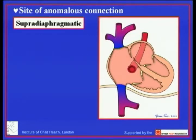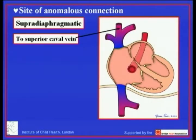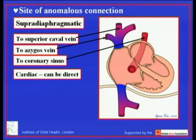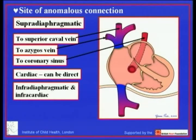The sites of anomalous connection are key to diagnosis. These can be supradiaphragmatic — to the superior caval vein, sometimes to the azygous vein and thence to the superior caval vein, and also to the coronary sinus. When veins drain to the coronary sinus, the anomalous drainage is both supradiaphragmatic and cardiac. Direct connection to the right atrial chamber also occurs, though in my experience this has always been associated with isomeric right atrial appendages, making the association between right isomerism and totally anomalous pulmonary venous connection particularly important.